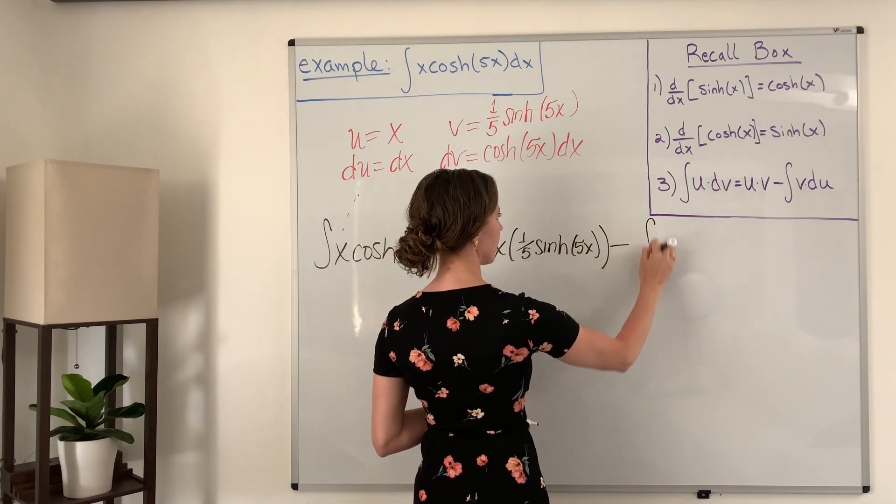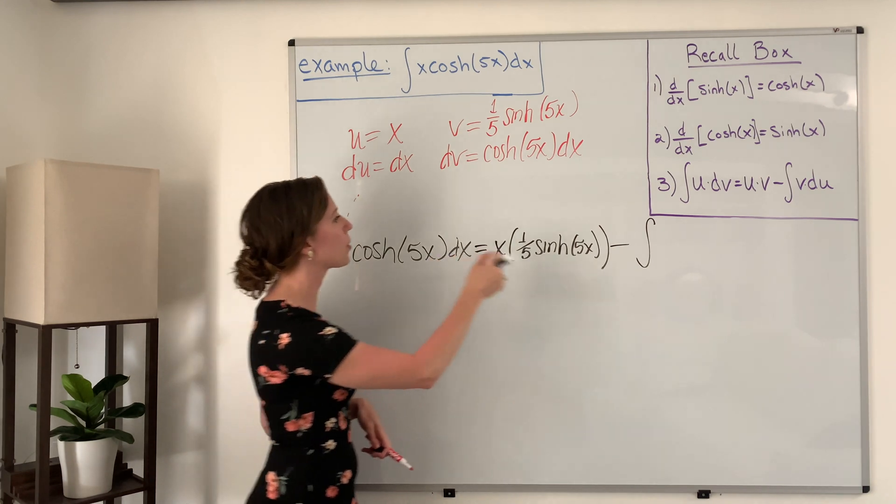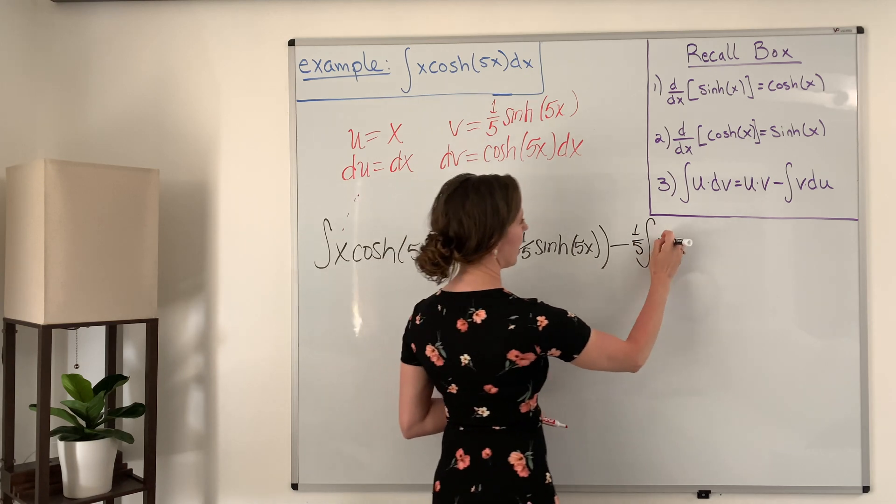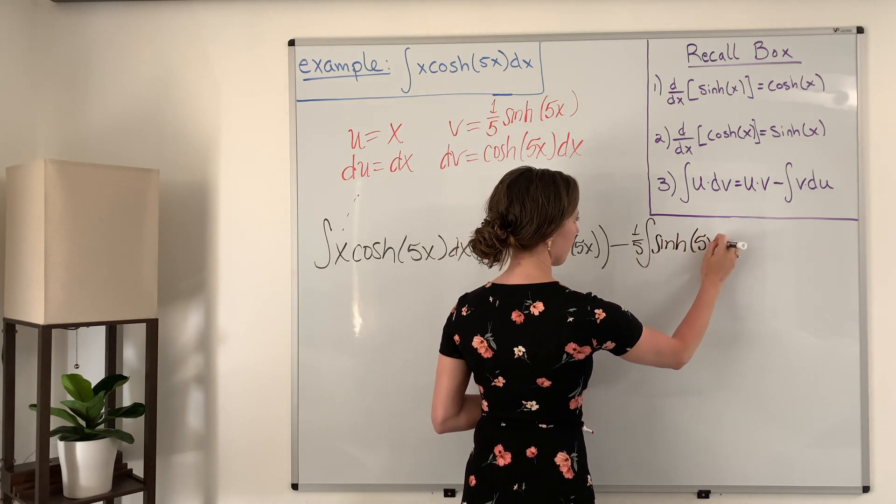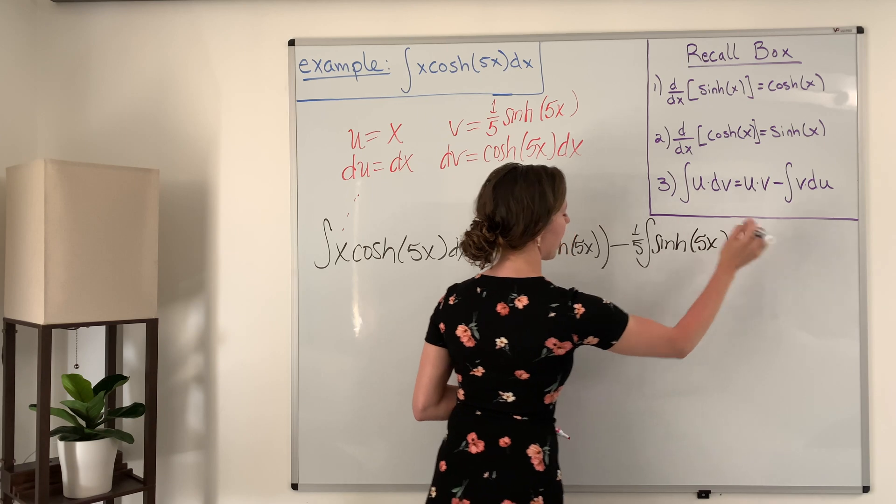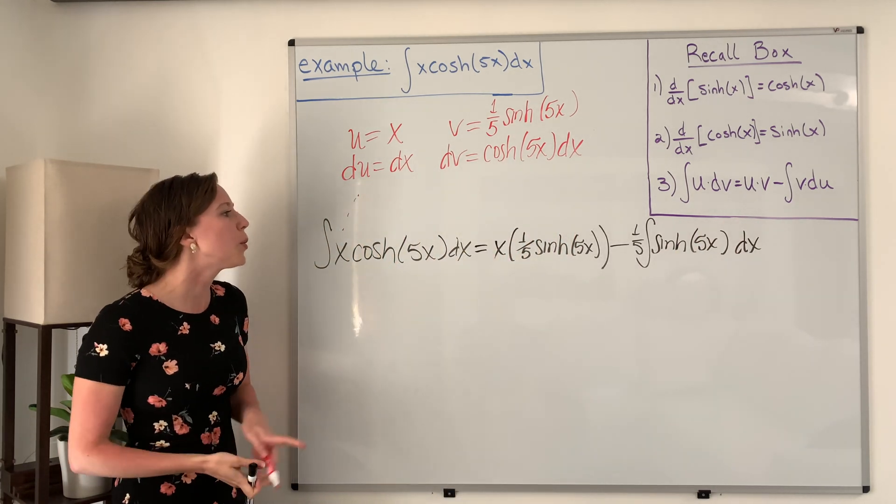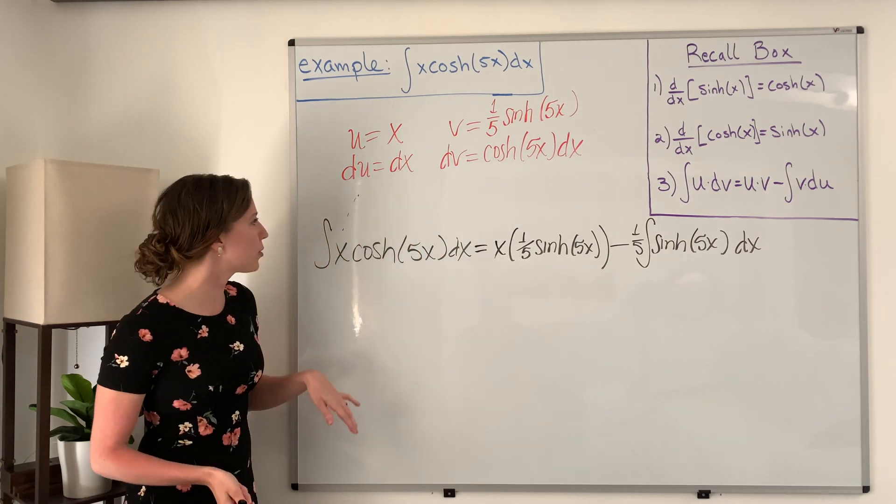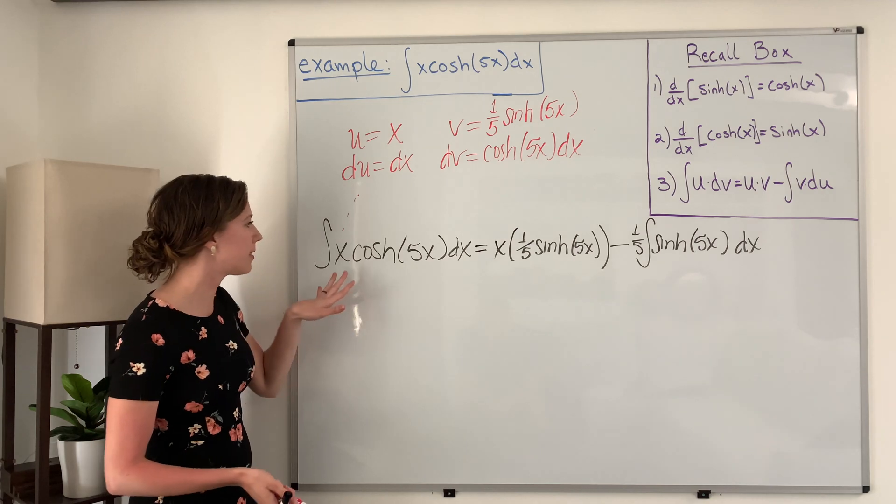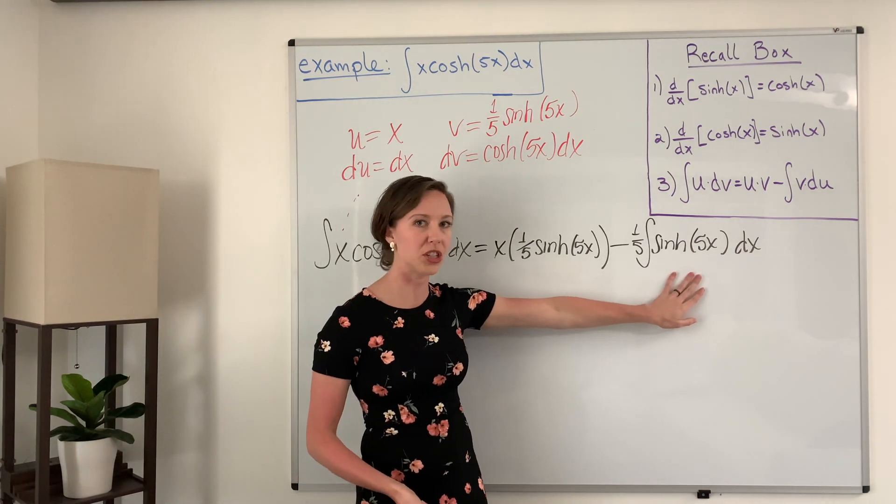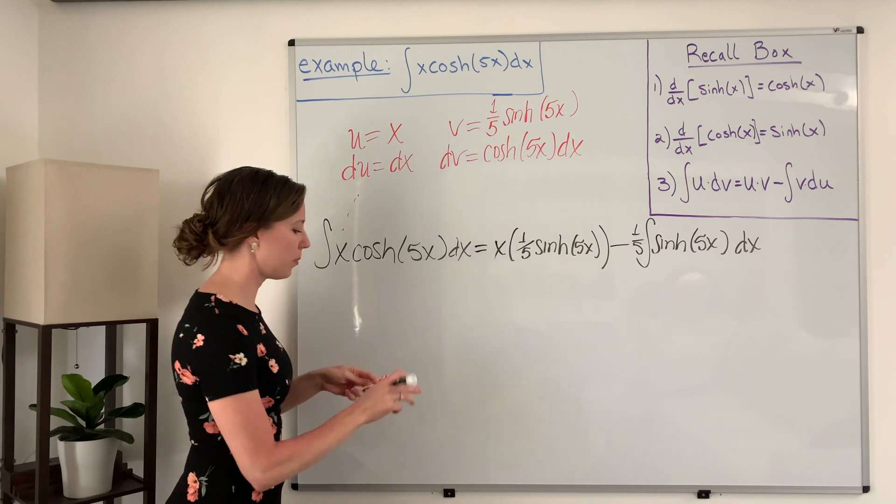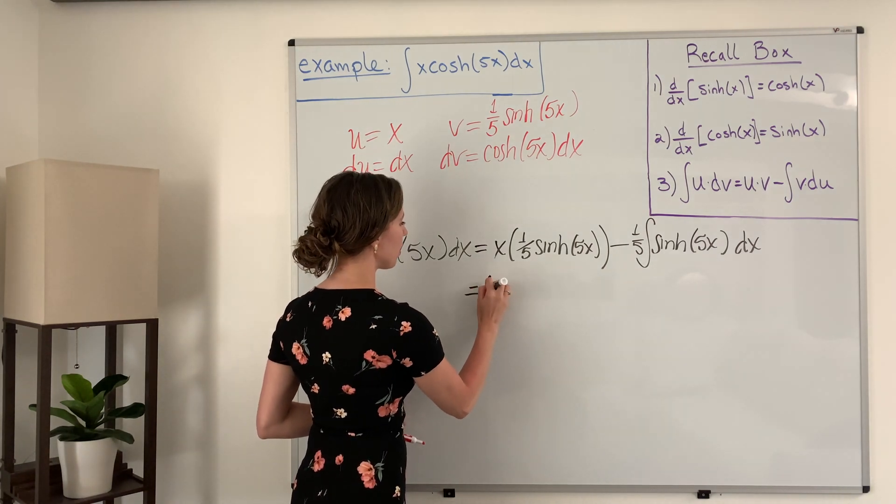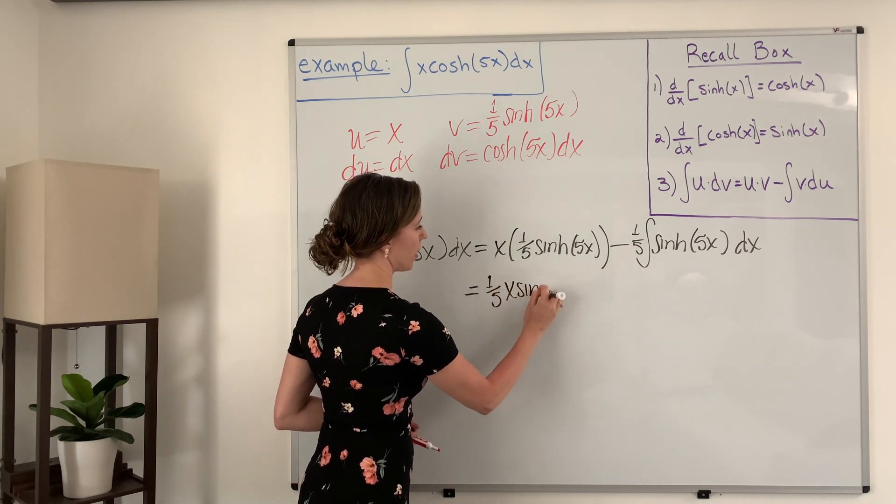Minus the integral of v du. And so we have one-fifth, we can bring that out in front, hyperbolic sine of 5x dx. And so now we have a function over here that we can take the integral of. And so that's why we're using integration by parts - it takes this mess and makes it a little more simple to solve. And so again we have this is equal to one-fifth x hyperbolic sine of 5x minus one-fifth times...